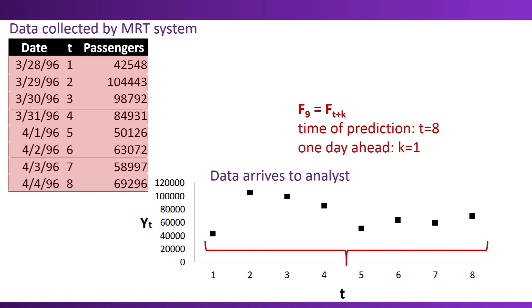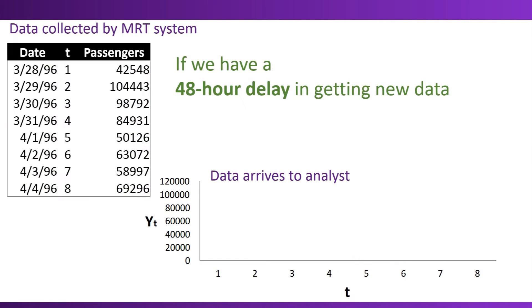But this is not always the case. In many applications, there is something that will cause a delay between the time the data are collected and the time they reach the analyst. Now let's look at another example with the same data, except that now suppose there's a 48-hour delay from the time the MRT system collects the information and the time this data reaches the analyst. So on March 28, 1996, at the end of the day, the system collects the data, but the analyst doesn't get it yet. The next day, March 29, new data are collected, and still the analyst does not see anything on that day.